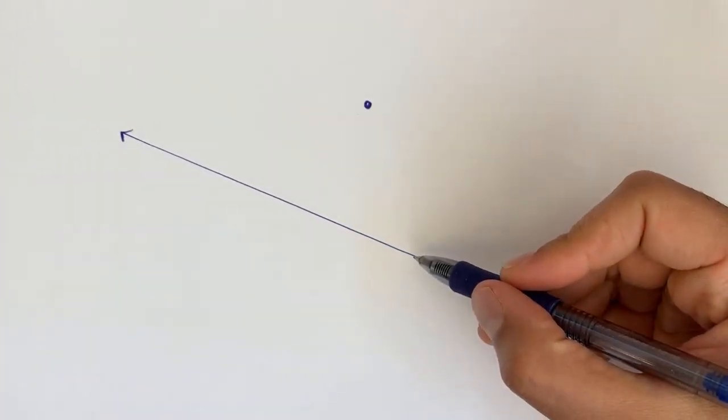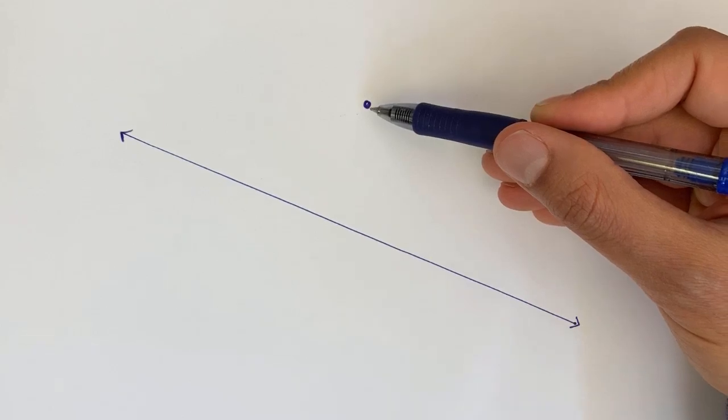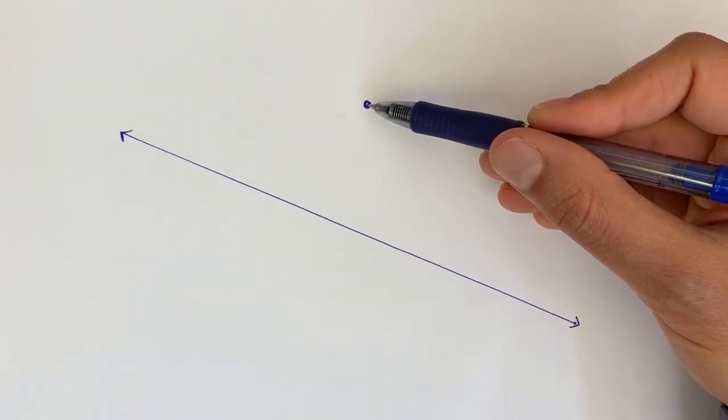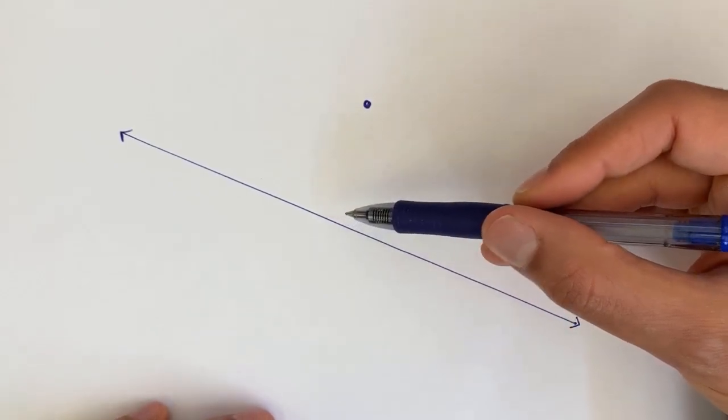What I have here is a line, and I have a point that is not on that line. And my goal is to draw a new line that goes through this point and is perpendicular to my original line. How do I do that?